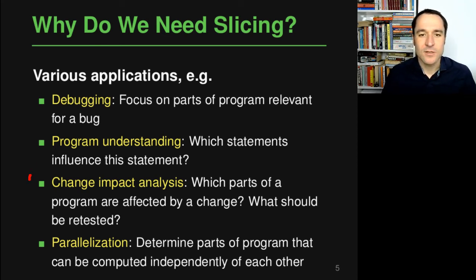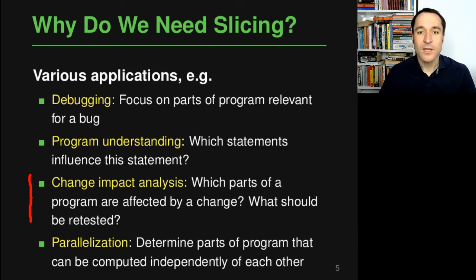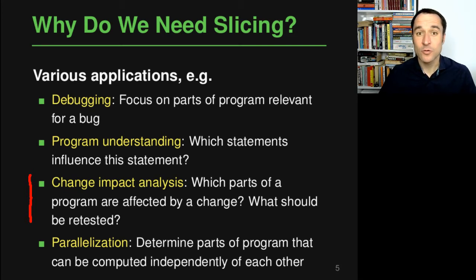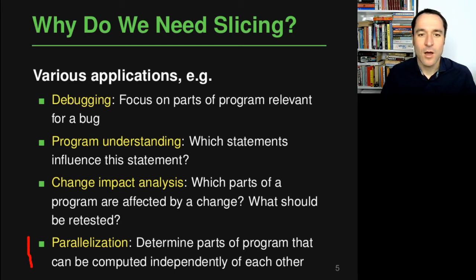A third application is so-called change impact analysis. When a program is evolving and the code is changing, at some point you want to know which parts of the code are affected by a particular change. This is interesting if you want to decide which parts of a program should be retested after a code change, because typically you do not have to retest everything — only those parts affected by the change — and that's something you can compute with slicing.